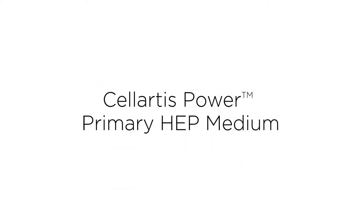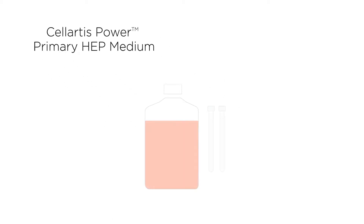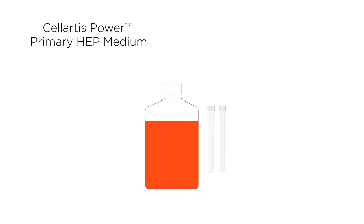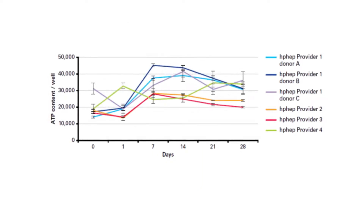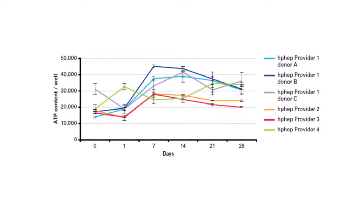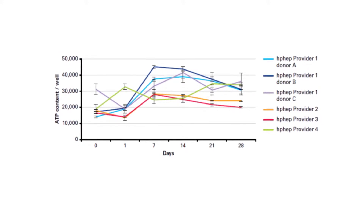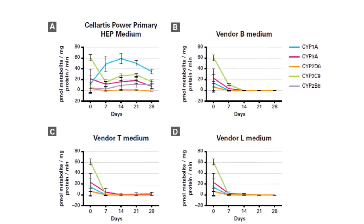If your experiments use primary hepatocytes, Solartis Power Primary Hep Medium can maintain cellular stability, functionality, and viability for up to four weeks in conventional 2D cultures. This, together with its superiority to other commercially available hepatocyte maintenance media, makes Power Primary Hep Medium the ideal choice for drug metabolism and toxicity studies.